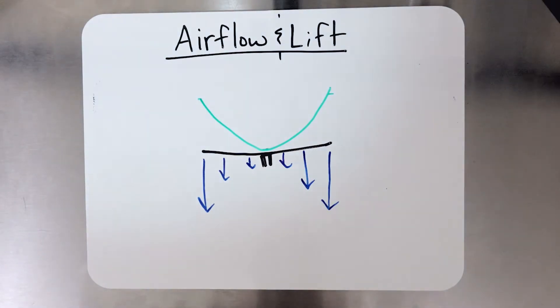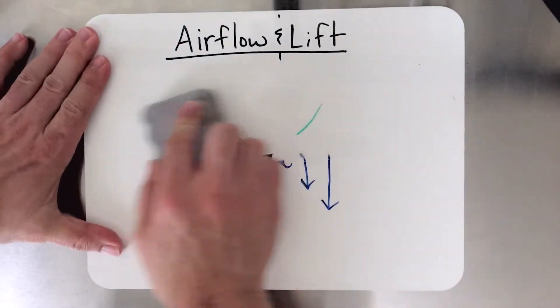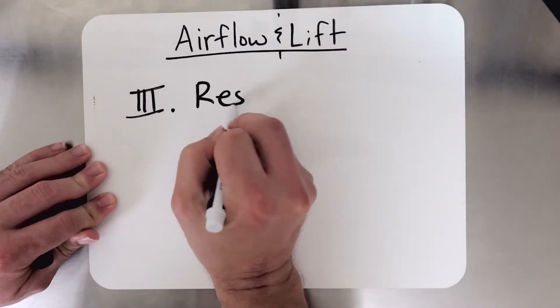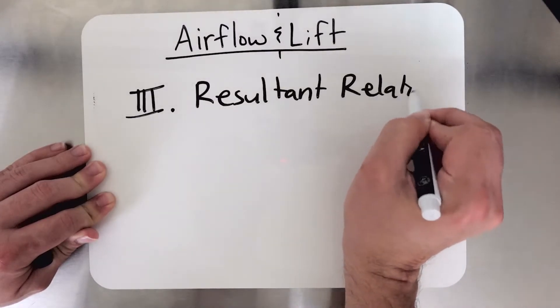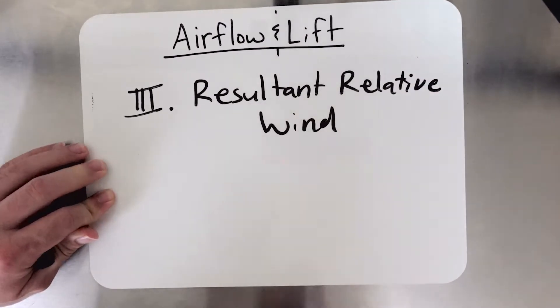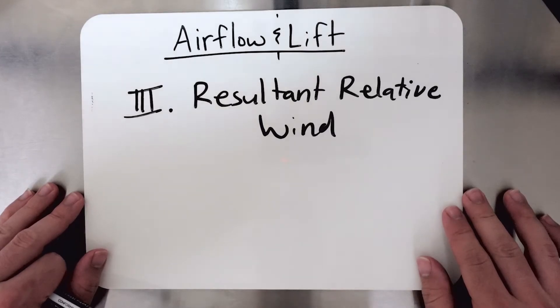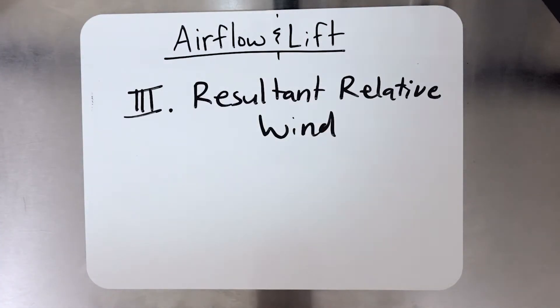Now this concept brings us to the third type of airflow. That third type of airflow is called resultant relative wind. And resultant relative wind is simply rotational relative wind taking into account induced flow. Now what exactly does that mean?